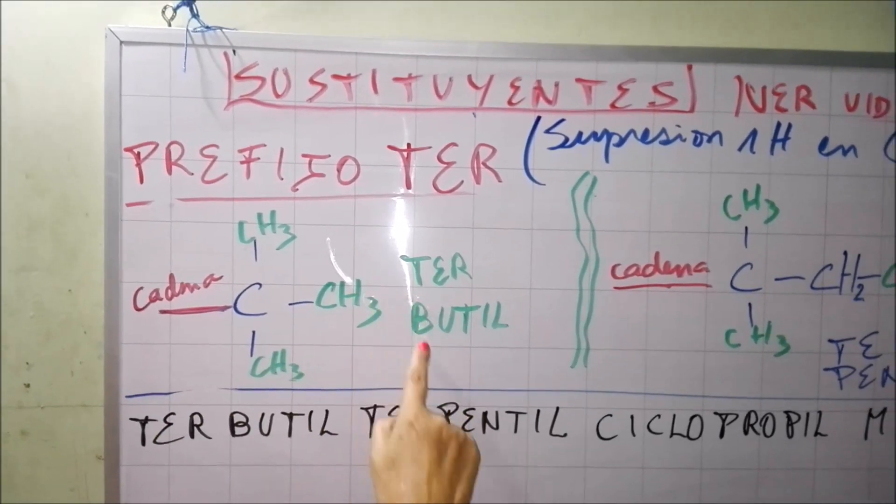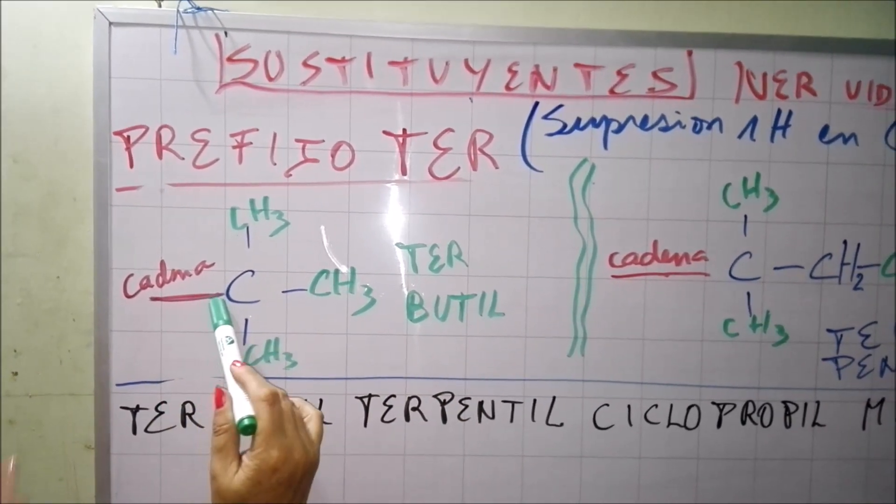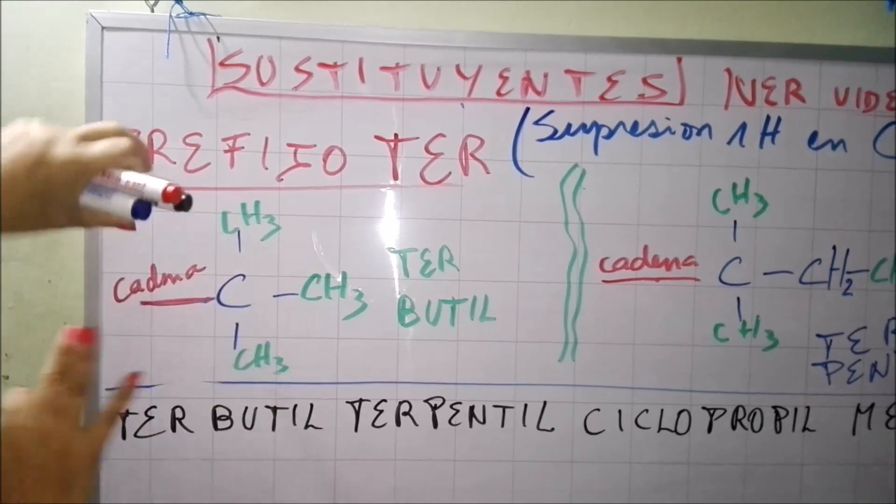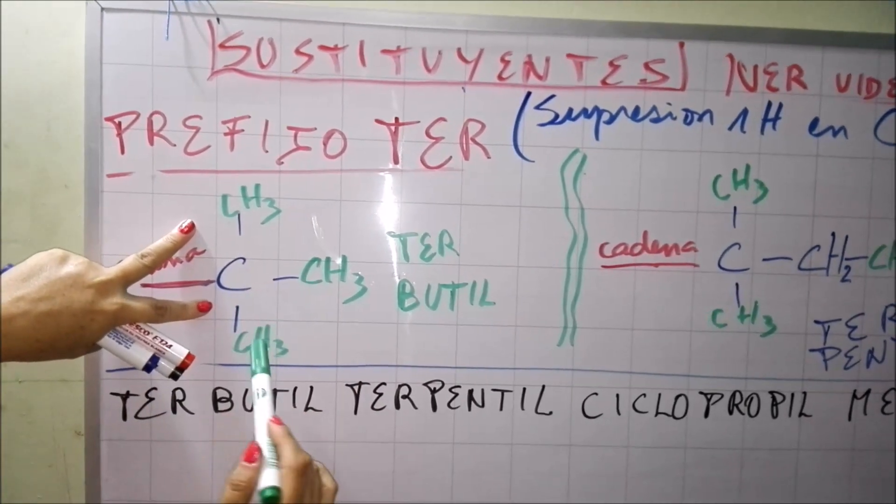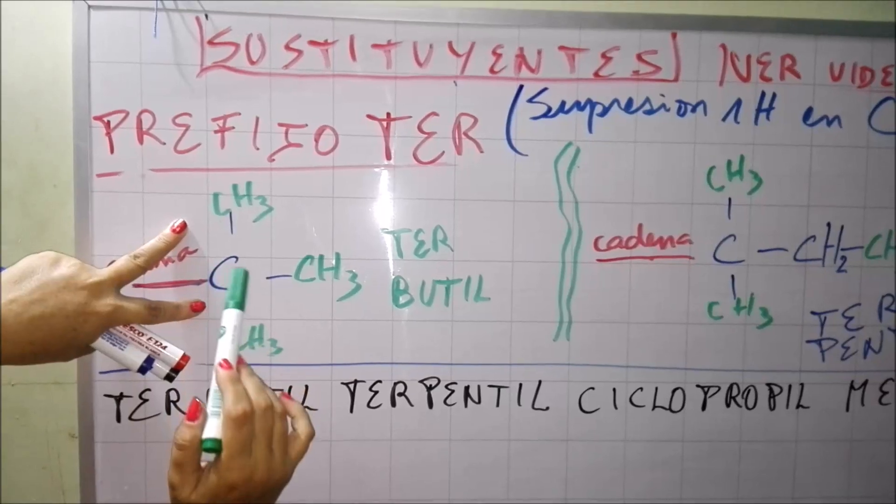En todo caso yo aquí tengo un terbutil, mira. Aquí a partir de cadena se prende en la cadena y se llama terbutil porque es 1, 2, 3 y 4.